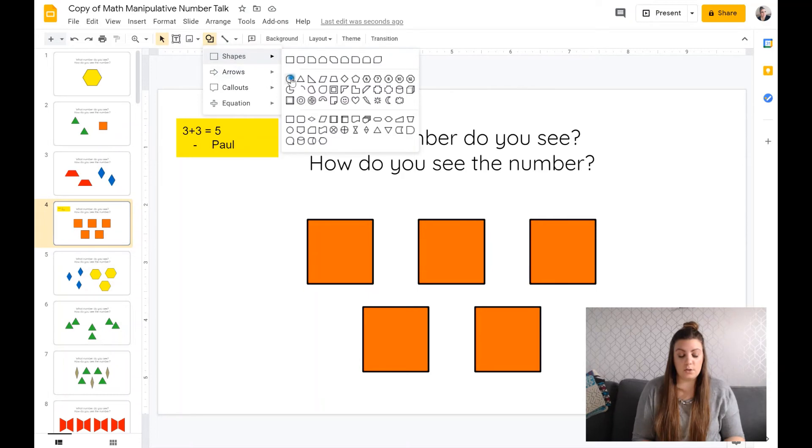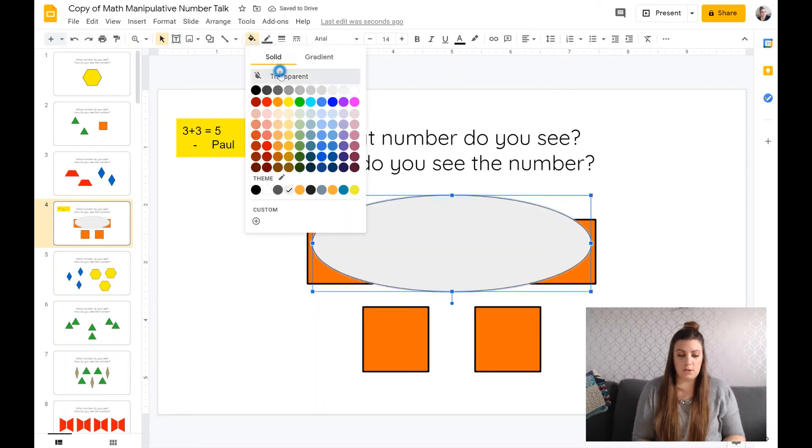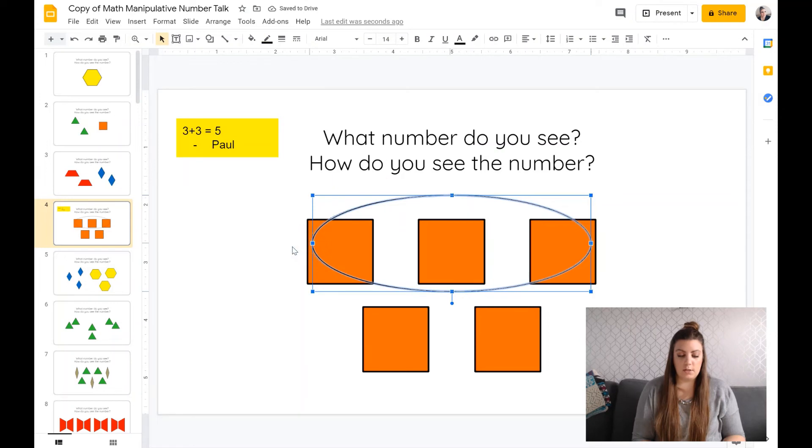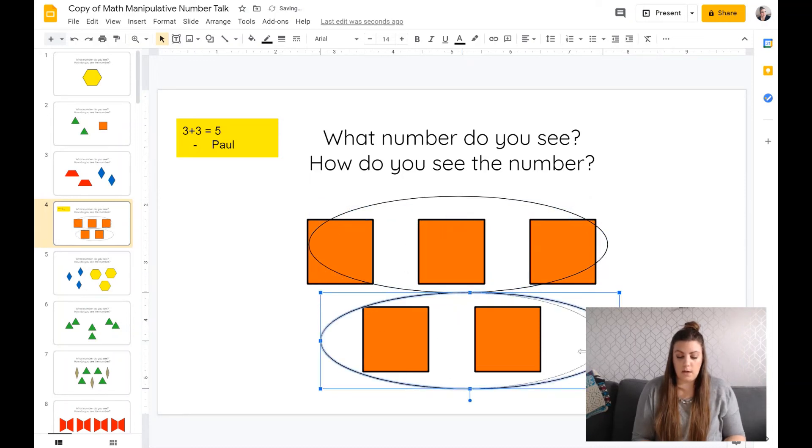Then you could also use a circle. Again, I like Jamboard because it has the pen feature where you can just draw on the whiteboard. But in Google slides, you could just use the circle tool and just make it transparent and just make the outline black. And then you could just copy and paste it the number of times that you need it to circle the different math thinking that they had. If you duplicate it, you could show that three and two makes five. And then you could change the color of the circles depending on the students, just like we did with the Jamboard to show the different math thinking.